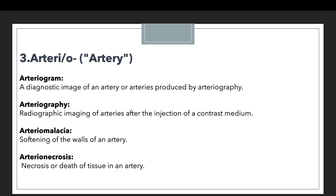The third prefix is artery or arterio, used to denote artery. For example, an arteriogram is a diagnostic image of an artery produced by arteriography. Arteriography is the radiographic imaging of arteries after injection of contrast medium. Arteriomalacia means the softening of the walls of an artery. Another example is arterio necrosis, which means the death of tissue in the artery — whenever tissue dies within the artery, we use the terminology arterio necrosis, starting with the prefix arterio.